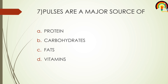Pulses are a major source of — option A: protein, option B: carbohydrates, option C: fats, option D: vitamins. The answer for this question is protein. Pulses are the major source of protein.